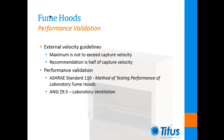There are two different standards that provide a means to determine that fume hoods are performing as intended when installed and operating within laboratories. Section 6 of ANSI Z9.5 covers commissioning and routine performance testing and is very similar to ASHRAE Standard 110. Both of these methods include airflow velocity testing, airflow visualization testing, and tracer gas containment testing, ensuring proper operation of the fume hoods within the air distribution system designed.